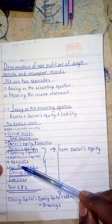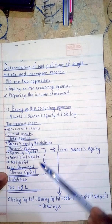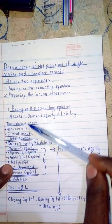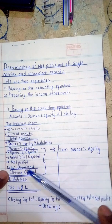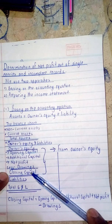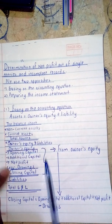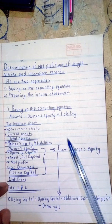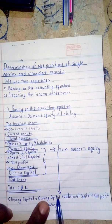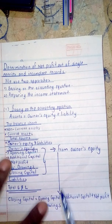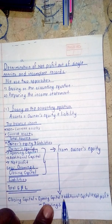The end result of the owner's equity section is the closing capital. So from the balance sheet, extracting the owner's equity part: Closing Capital = Opening Capital + Additional Capital + Net Profit − Drawings. Since we want net profit as the subject, we rearrange this equation.